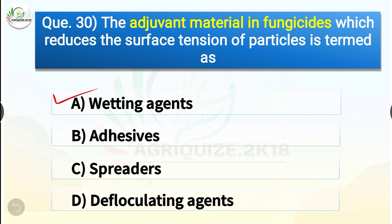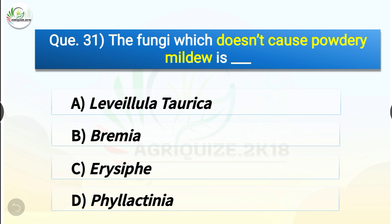Question number thirty-one: The fungus which does not cause powdery mildew is dash. The options are Leveillula taurica, Bremia, Erysiphe, or Phyllactinia. The correct answer is option B, Bremia. The fungus which does not cause powdery mildew is Bremia. Leveillula taurica causes powdery mildew in onion, Erysiphe causes powdery mildew in crucifers, and Phyllactinia causes powdery mildew in mulberry.